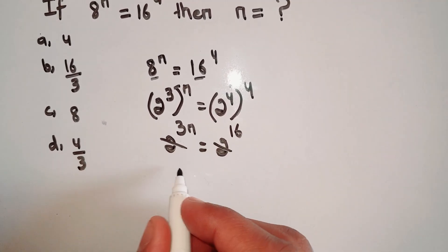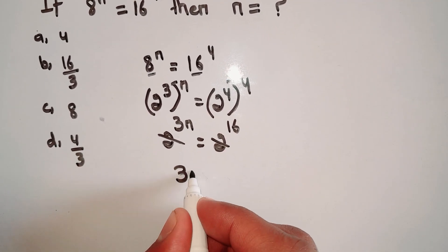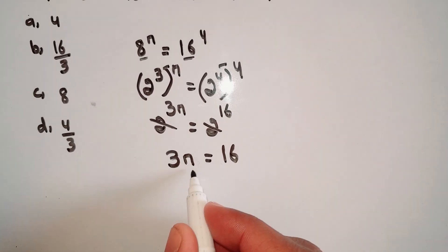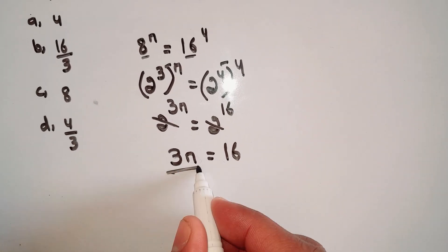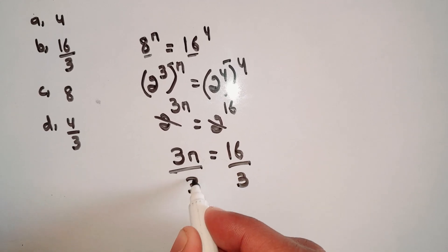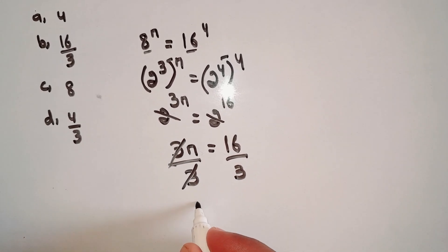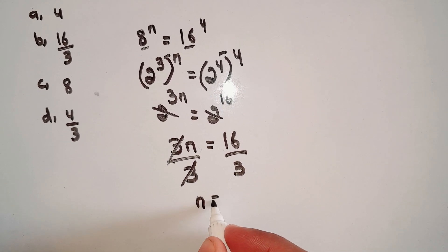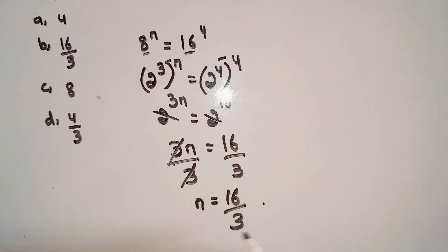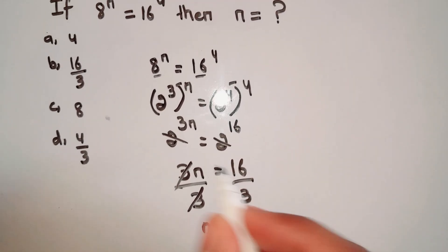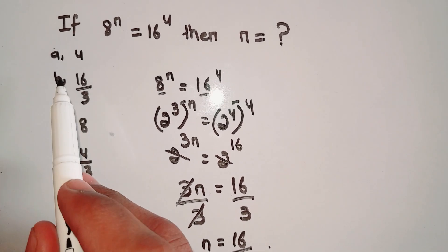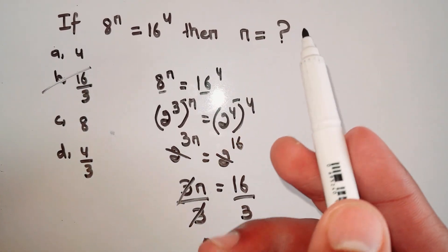Now when the bases are same, we just equate the powers. So we write 3n is equals to 16. Now we divide both sides by 3, and 3 cancels, so n is equals to 16 upon 3. So option number B, 16 upon 3, is correct.